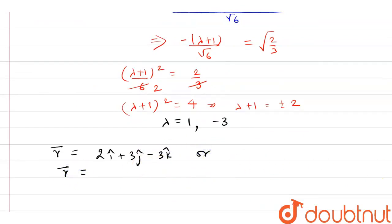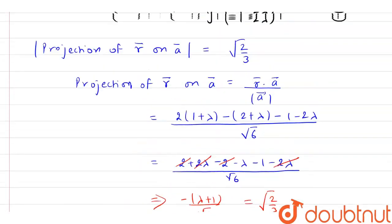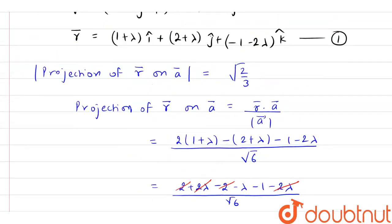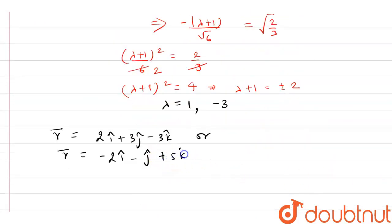If I put minus 3, so if I put minus 3 we have minus 2i cap and we have minus j cap. And if you put minus 3 here, you have 6 minus 1, we have 5k cap.